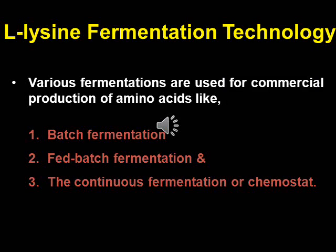Various fermentation types are used for commercial production of amino acids. Batch fermentation is a closed culture system in which an initial amount of nutrients remains limited. Nutrients soon become limited and growth of organisms ceases as they enter the stationary phase. Amino acid synthesis generally starts in the early log phase and continues throughout the stationary phase.